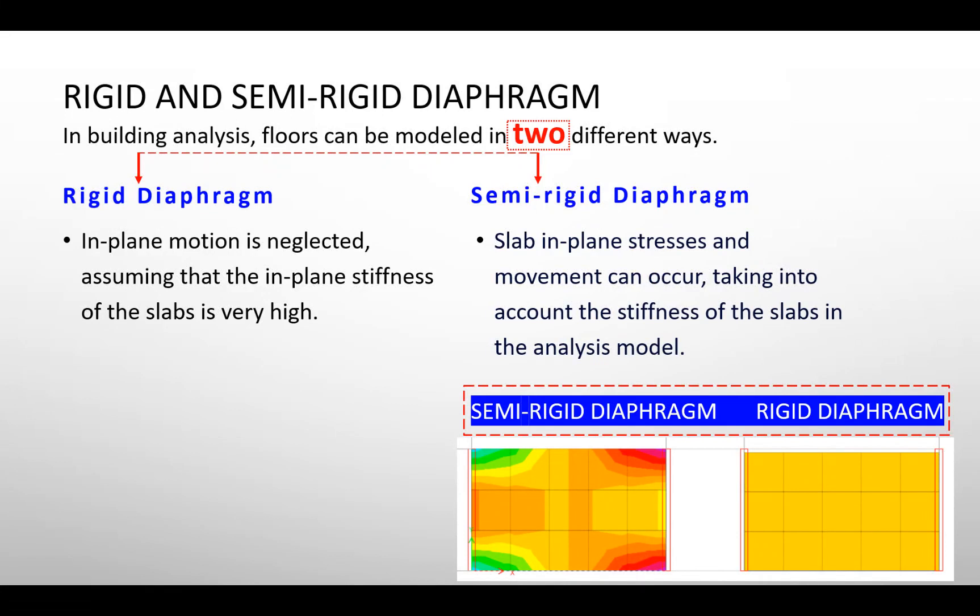Hello everyone. In this video I will explain the difference between rigid and semi-rigid diaphragm, and then I will show how to assign the diaphragm in ETABS. In building analysis, floors can be modeled in two different ways: rigid diaphragm and semi-rigid diaphragm.